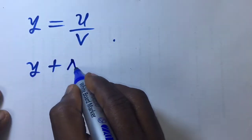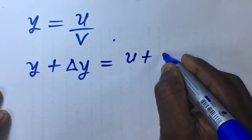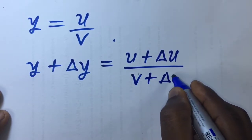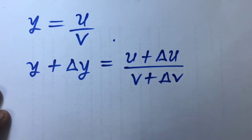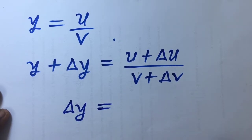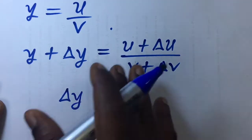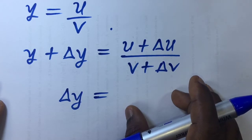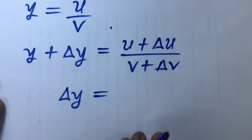If y increases by an infinitesimal change in y, then this must have come from infinitesimal changes in u and v. These infinitesimal changes will be called delta v, delta u, delta y. The next thing is to make delta y the subject of formula. After making increments in the independent variable and then u and v, the component functions, make the change in y the subject of formula.